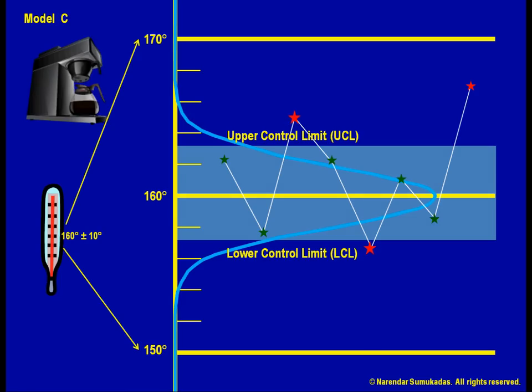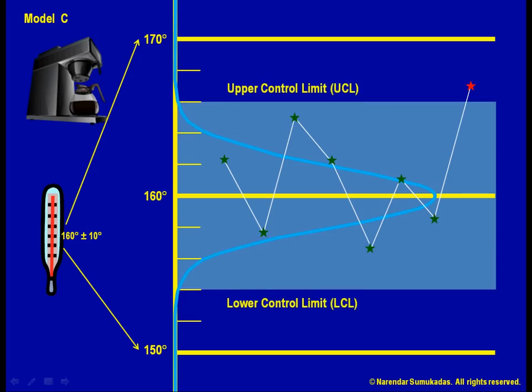On the other hand, if I select a wider band, I would have a weaker alarm. The process would have to go much more out of whack before I started seeing observations outside the band. A lot of process shifts and abnormal behavior may go unnoticed. That is called a type 2 error.